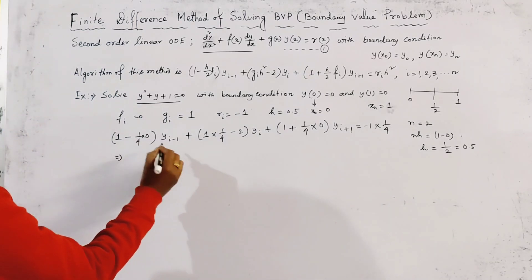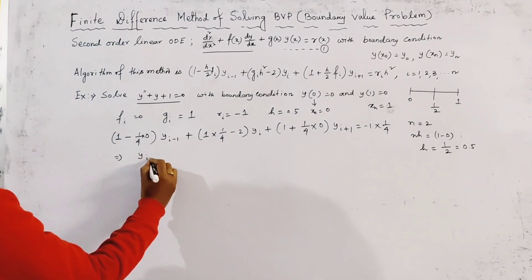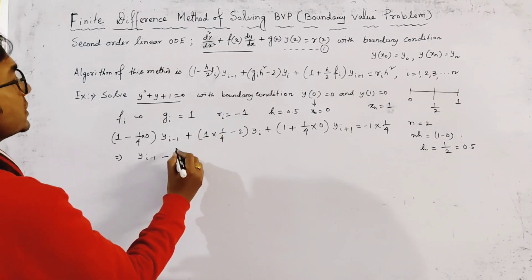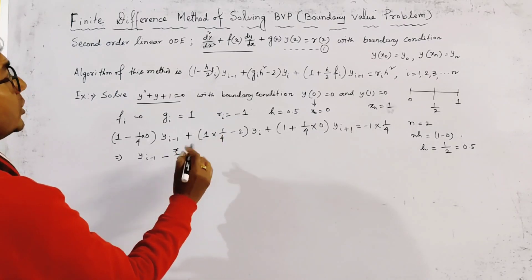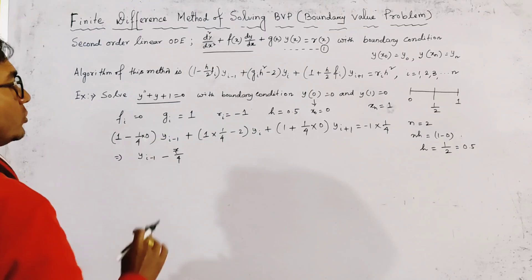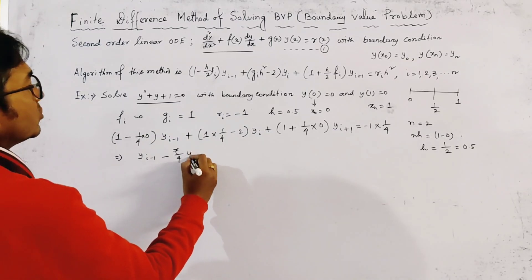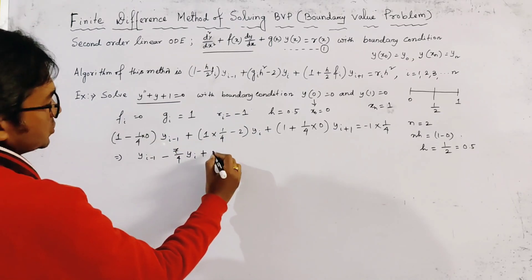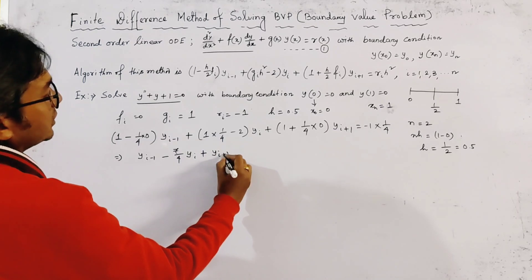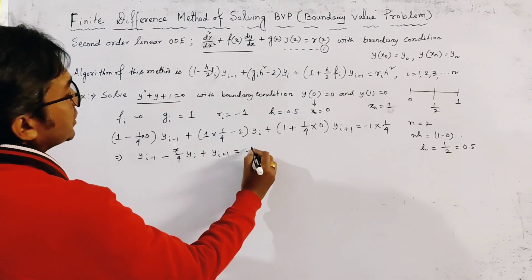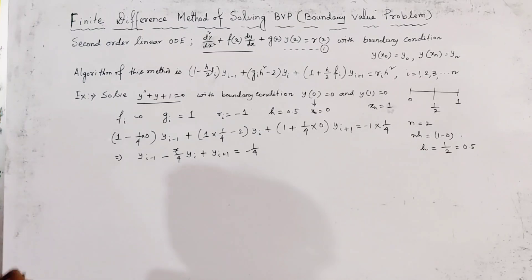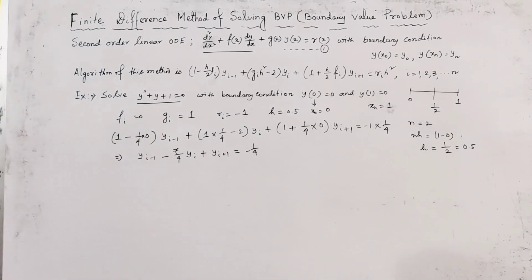Simplifying, we get the recurrence relation: y_{i−1} − (7/4)·y_i + y_{i+1} = −1/4, since 1 − 8/4 = −7/4. This is the algorithm for the given differential equation.